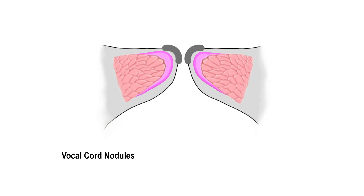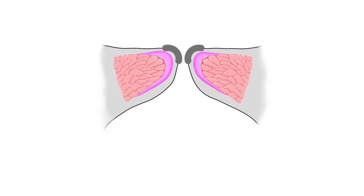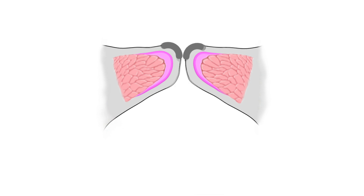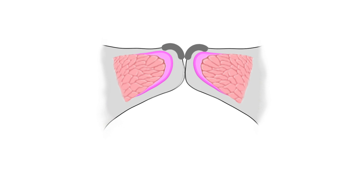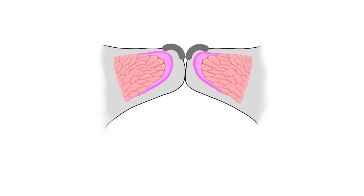Vocal cord nodules can develop with aggressive voice use, leading to callus-like growths on the vocal cords, resulting from abnormal thickening of the mucosal epithelium at the point of maximum contact between the two vocal fold sides. This may lead to a raspy-sounding voice, as the nodules may disrupt the mucosal wave. The normally cyclic and symmetric vibration of the vocal folds during phonation now becomes asymmetric and irregular.